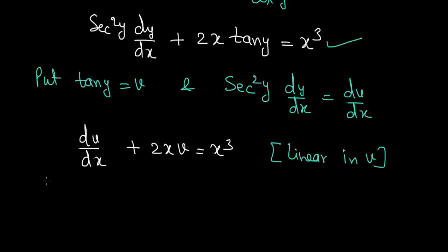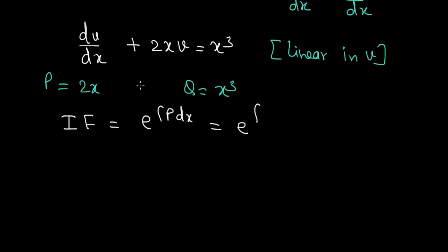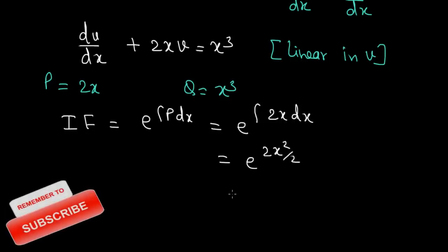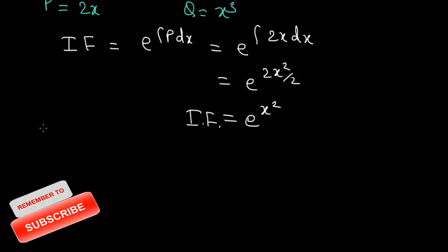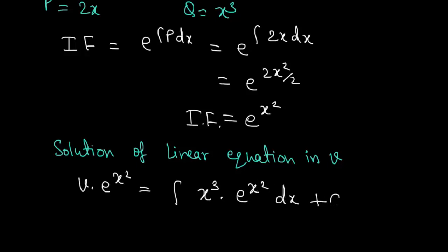Here P = 2x and Q = x³. The integrating factor is IF = e^(∫2x dx) = e^(x²). The solution is v·e^(x²) = ∫x³·e^(x²) dx + C.